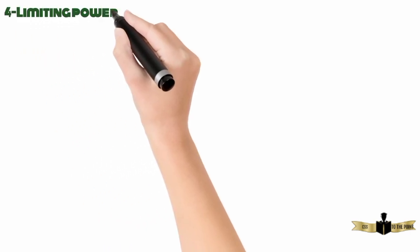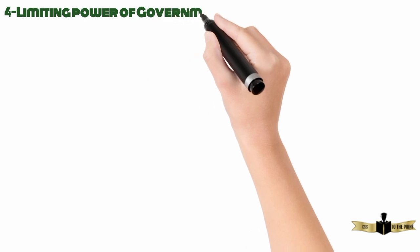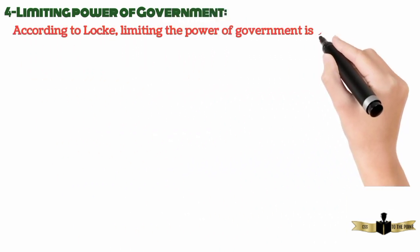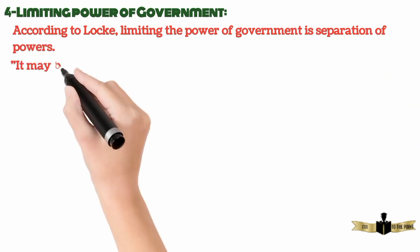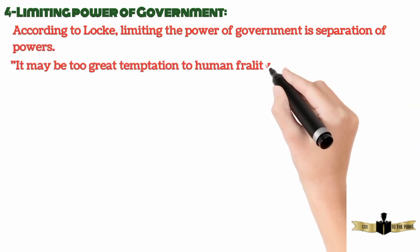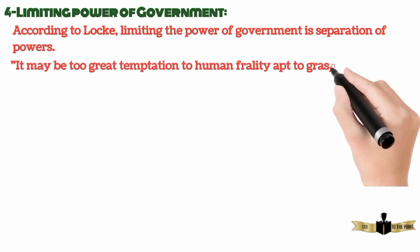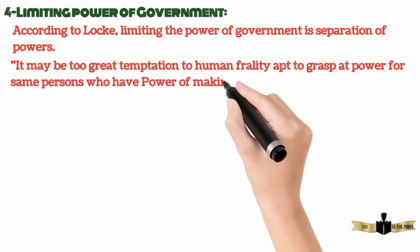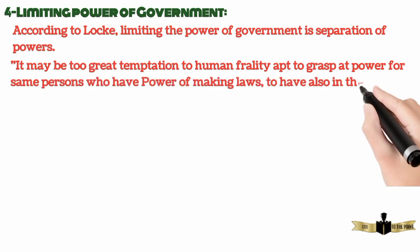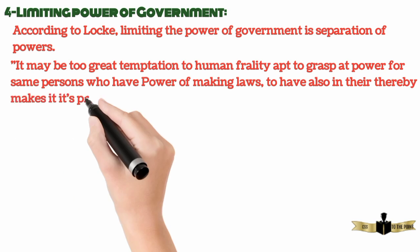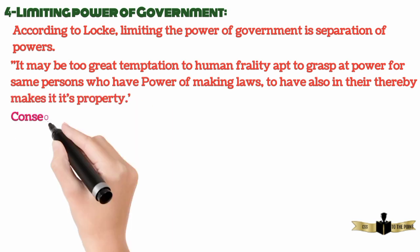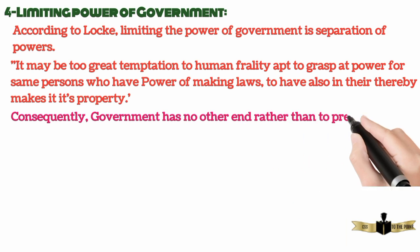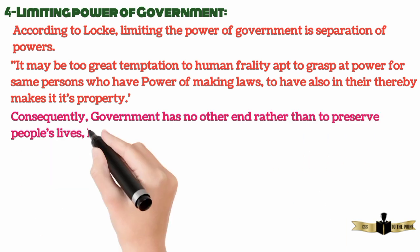4. Limiting the power of government. According to Locke, limiting the power of government means separation of powers. It may be too great a temptation to human frailty for the same persons who have the power of making laws to also have the power of executing them, thereby making it their property. Consequently, government has no other end than to preserve people's lives, liberties, and estates.